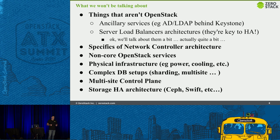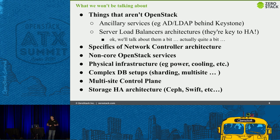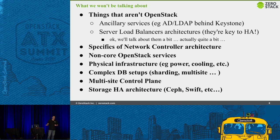We'll touch on load balancers because they're critical to HA and your control plane, but not complex load balancer architecture. The network control plane has its own issues — if you're running something like OpenContrail from Juniper, the minimum entry bar is five controllers just for the network control plane. That's something very specific to each deployment and SDN configuration.